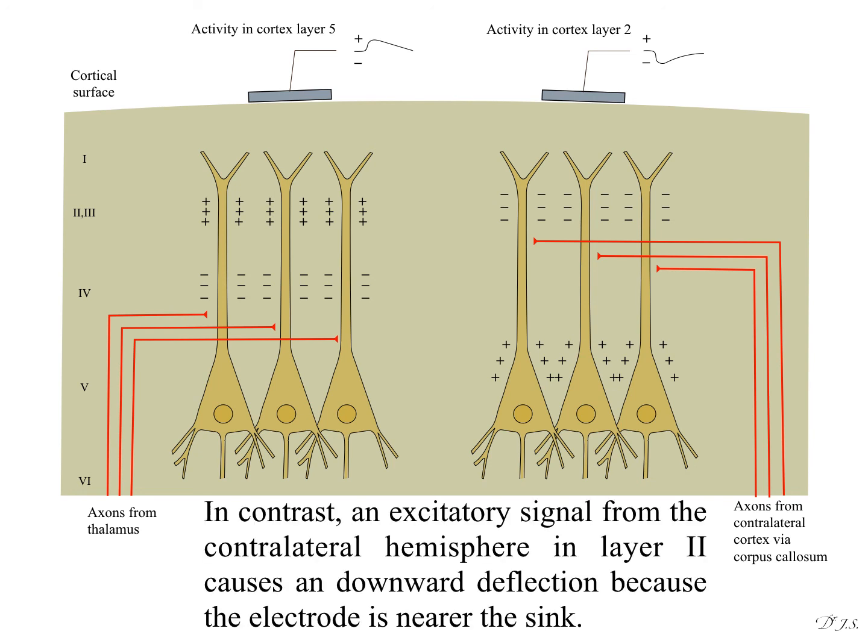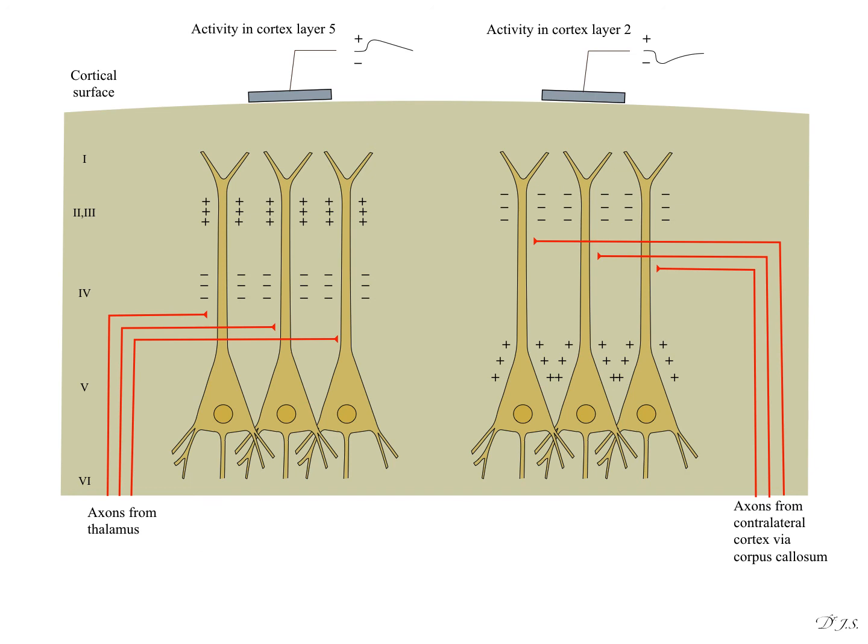an excitatory signal from the contralateral hemisphere in layer second causes a downward deflection because the electrode is nearer the sink.